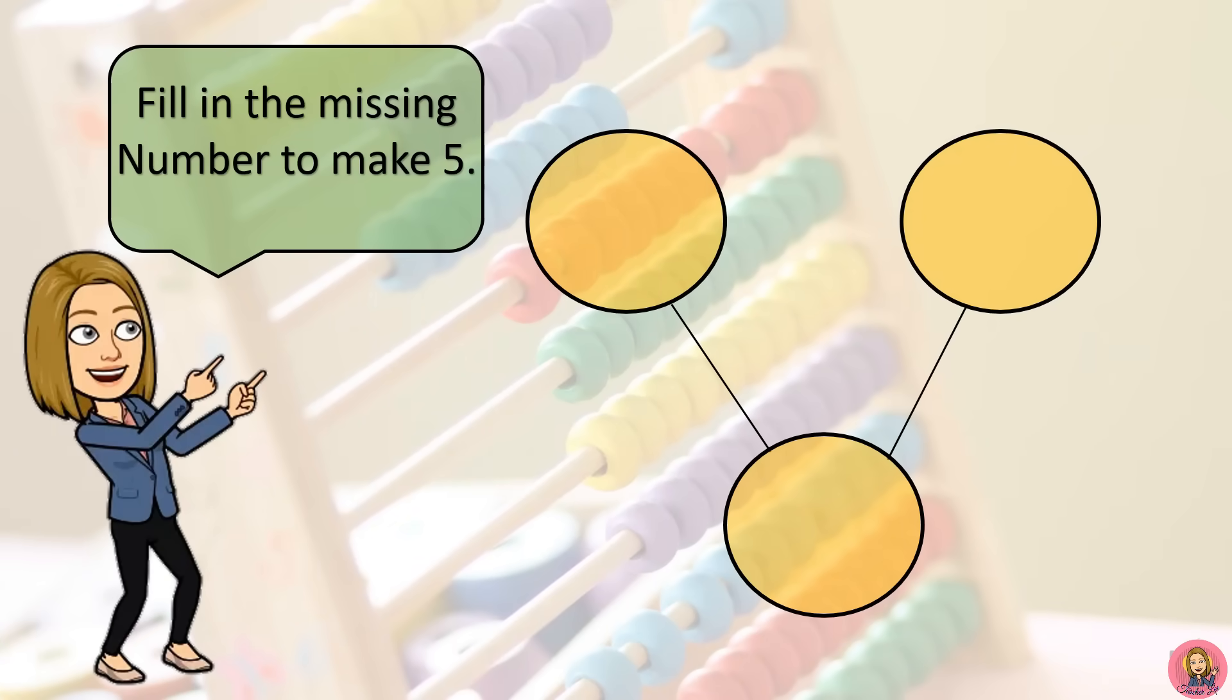Here we have the number 4, and we have here the number 1. What happens if we put 4 and 1 together? That's right! You get 5.